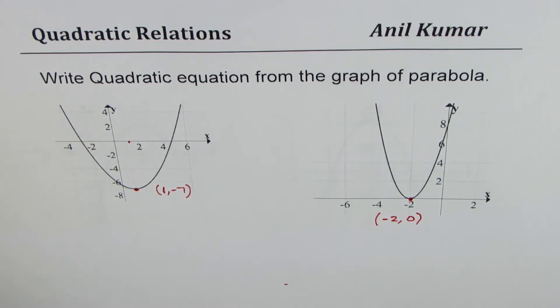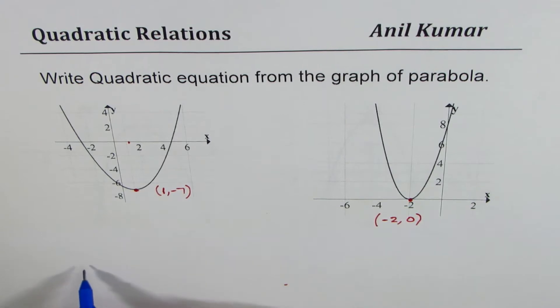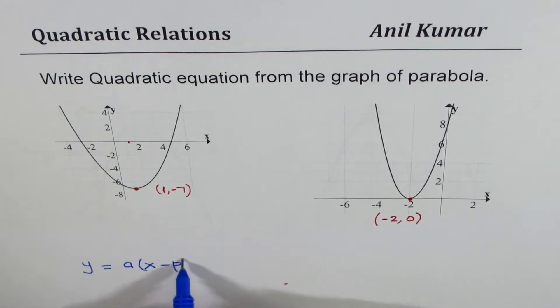So when you have to model a situation in which vertex is known, then the quadratic relation in vertex form is best to use. So let me write down the relation first for the convenience of all students, and that is normally written as y equals to a times x minus p whole square plus q.